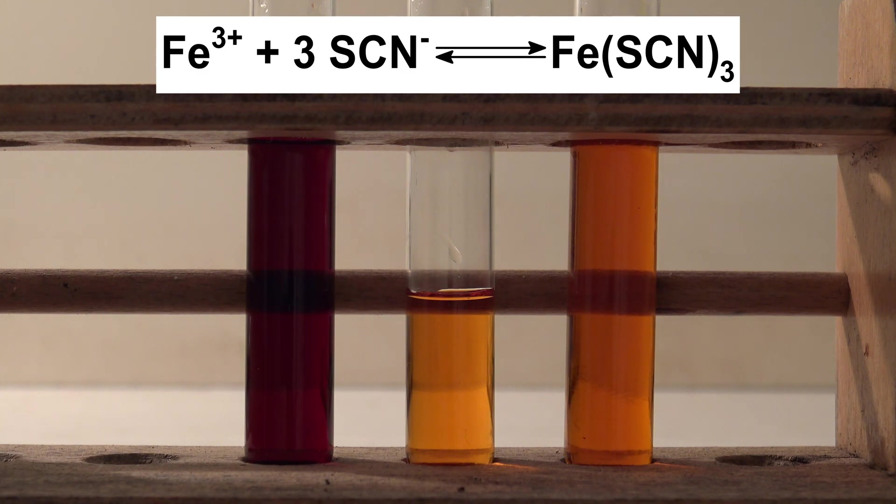The iron(III) and thiocyanide ions exist in an equilibrium with the iron(III) thiocyanide. In an equilibrium the reactions have not stopped. The speeds of the forward and reverse reaction are just the same, making it seem as if the reaction is over.